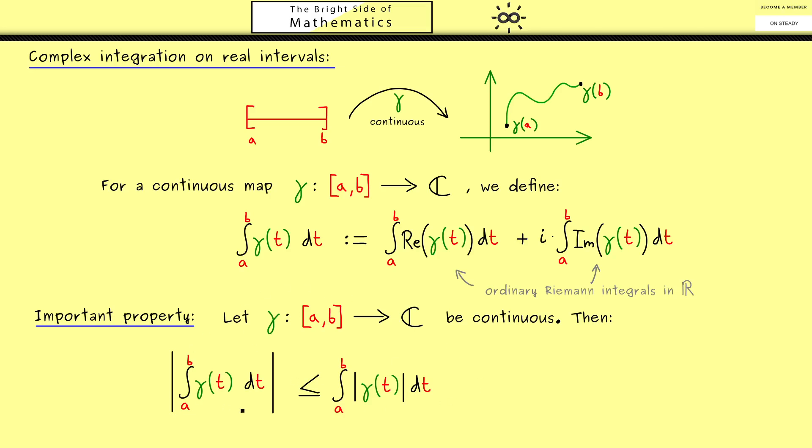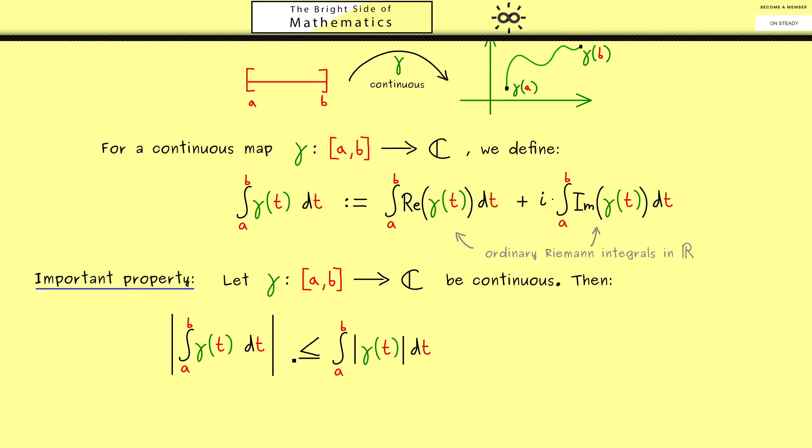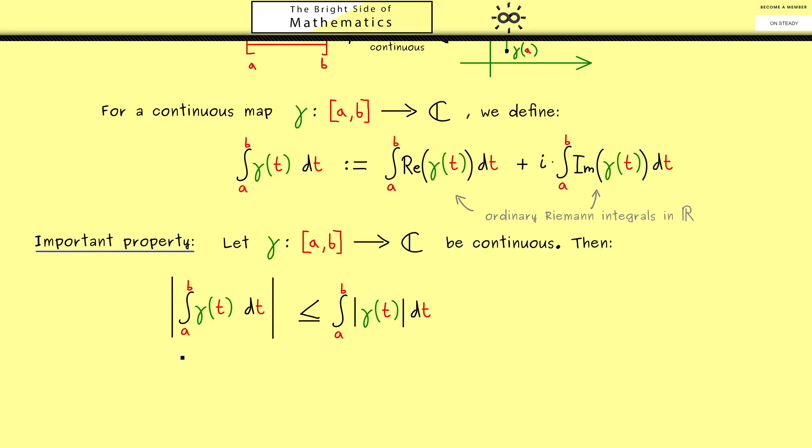Now before we prove this important property I would say let's first look at an example. Indeed what will happen a lot is that we look at a circle in the complex plane. Now this is not hard to describe. We just choose gamma with domain interval 0 to 2π. And gamma of t should be given by e to the power it. So simply the exponential function of it.